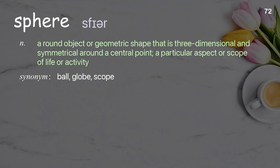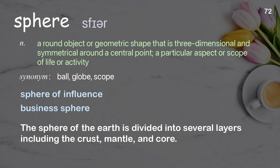Sphere: a round object or geometric shape that is three-dimensional and symmetrical around a central point; a particular aspect or scope of life or activity. Examples: sphere of influence, business sphere. The sphere of the earth is divided into several layers including the crust, mantle, and core.